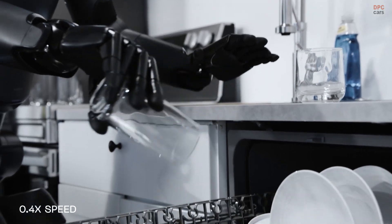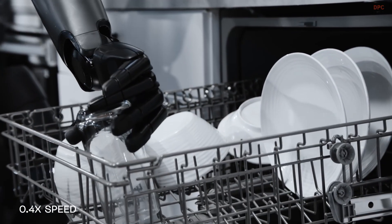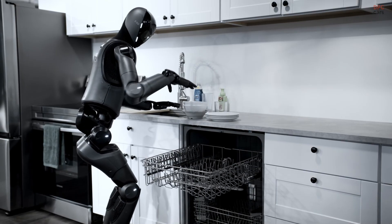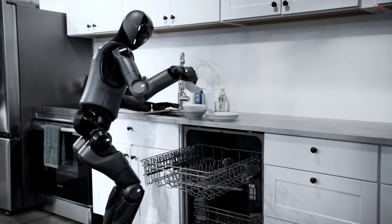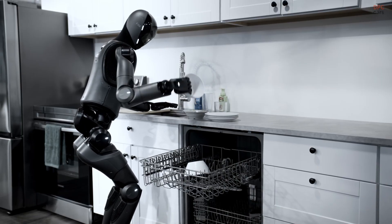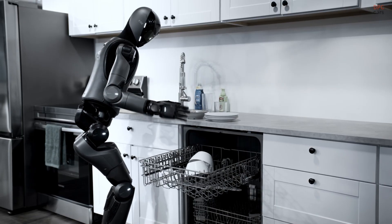The robot listens to plain instructions, interprets a messy scene, and chooses grasps on the fly. That is hard. Kitchens are chaotic. Lighting shifts. Objects hide behind other objects. Yet the motion stays smooth enough to trust.